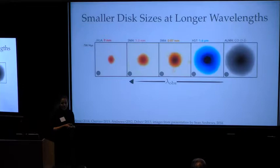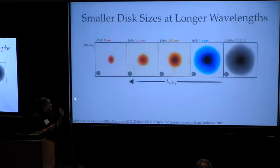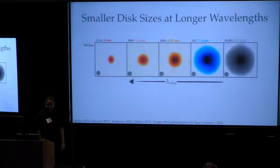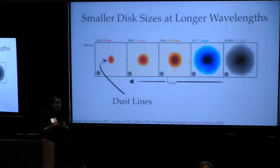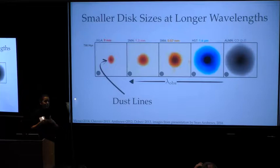So one way that we may be able to do this is through analyzing recent multi-wavelength observations of disks in the millimeter. Here, I'm showing a representation of the disk TW Hydra at different observational wavelengths put together by Sean Andrews. And you can see that the same disk appears smaller in radial extent at longer wavelengths. I refer to the maximum radius in which you see emission at a given wavelength as a dust line.